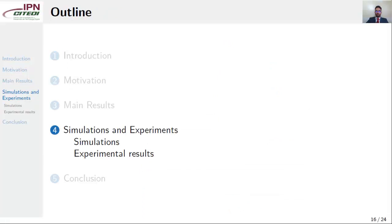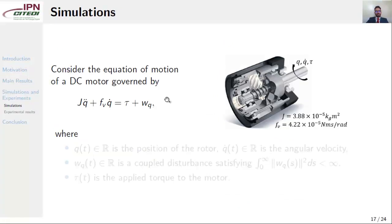Simulations and experiments are shown next. Consider the equation of motion of a DC motor, as here, where q is the position of the rotor, dot q is the angular velocity, w_q is a torque disturbance satisfying the bounded condition, and tau is the applied torque to the motor. Our model has parameters like inertia and viscous friction coefficient as shown here.